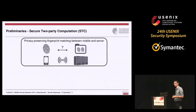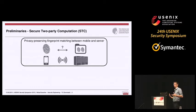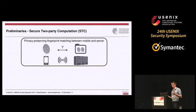As an example application of secure computation: we have a smartphone user with a fingerprint and a server with a database of fingerprints, and we would like to match them. Those parties only need to learn the boolean outcome — whether there is a match or not — so we would like to do that in a privacy-preserving manner, either with a dedicated protocol or using generic secure computation.